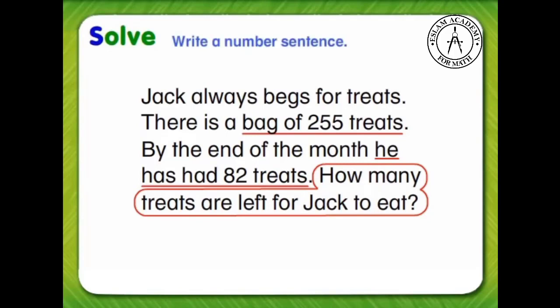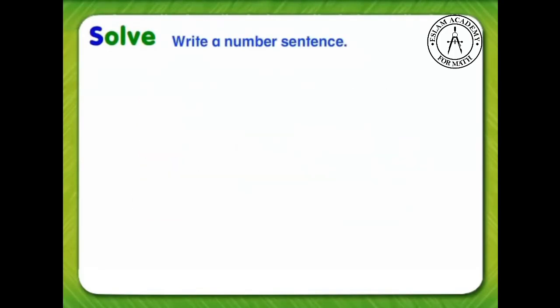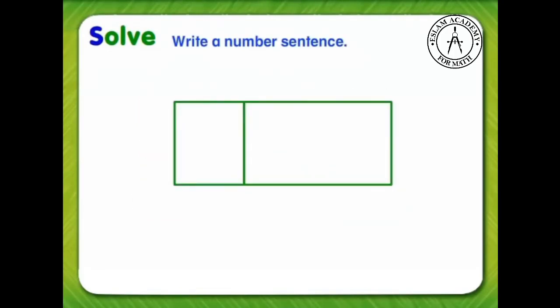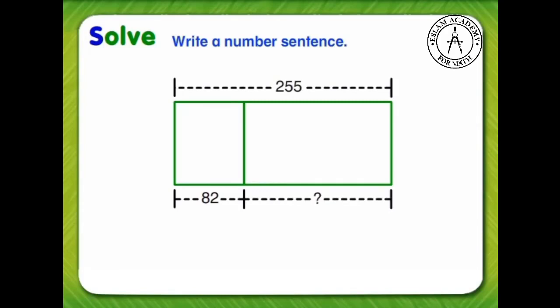Now, we can solve the problem. Let's begin by drawing a bar diagram to model our number sentence. Since Jack had 82 treats, write 82 below the first section. There was a total of 255 treats in the bag, so write 255 above the diagram. Write a question mark under the second section. This is the information we need to find.